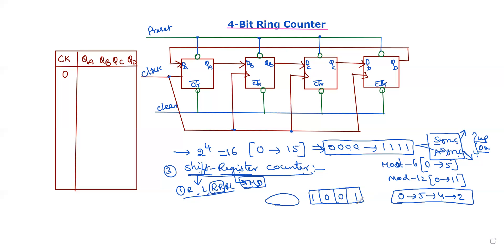With right shifting, a bit is placed at the end and the last bit is discarded or eliminated. The empty place created is a gap, so data is lost in normal right shifting.